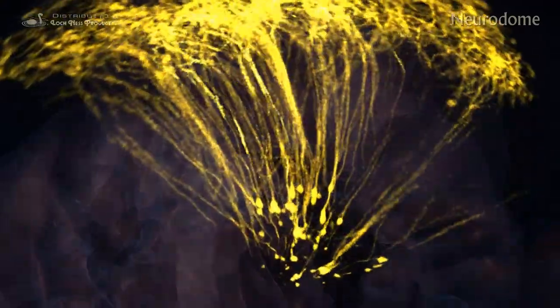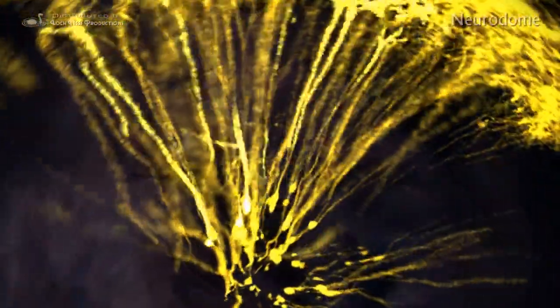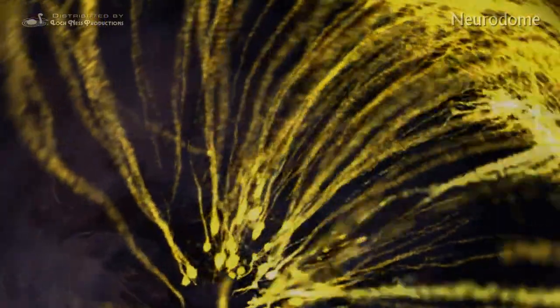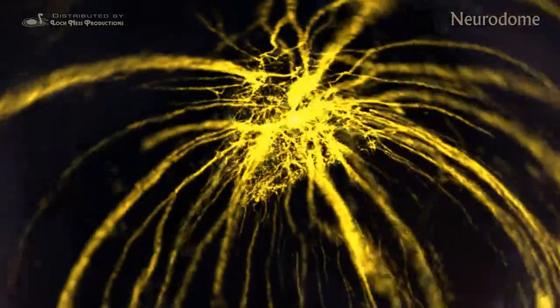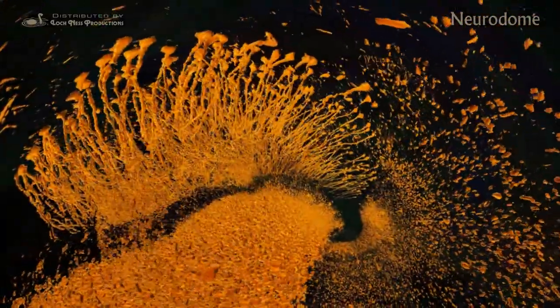These things that look like trees are electrically active cells called neurons. You're just looking at a handful, but there are about a hundred billion neurons in the brain, around the number of stars in our galaxy. These are called place cells.